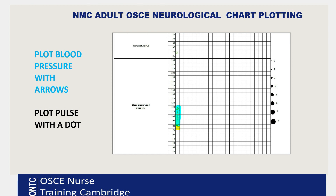For blood pressure and pulse, they are plotted in the same area. Plot blood pressure exactly the same as you do on your NEWS chart: an arrow up for systolic, arrow down for diastolic, joined with a dotted or solid line — both are fine. For heart rate, plot clearly with a dot in the correct box. It may come very near to your blood pressure arrow, so keep it slightly separate with a clear dot.